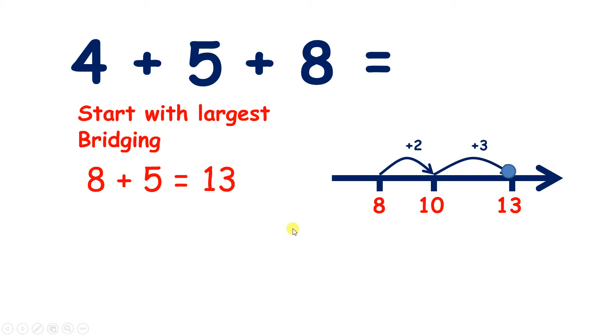So with bridging we think how many more do we need to get to 10 or to the next multiple of 10, and then we add the rest of the number. Now we still need to add 4. So 13 plus 4 equals 17.